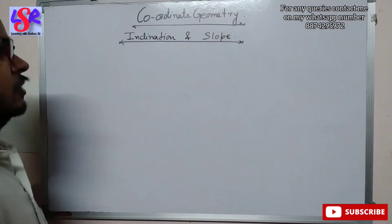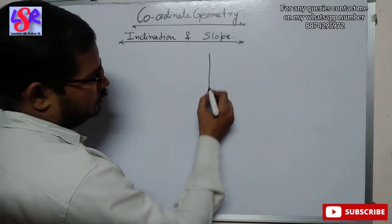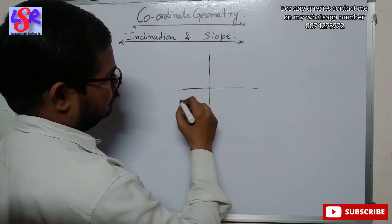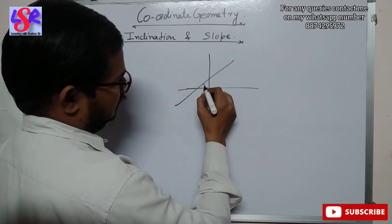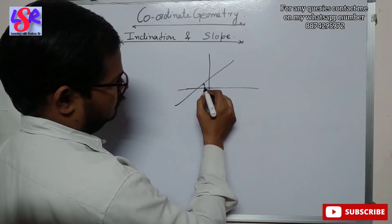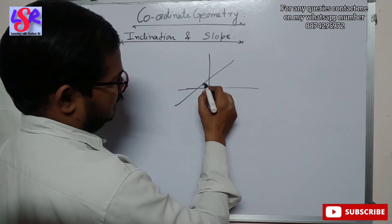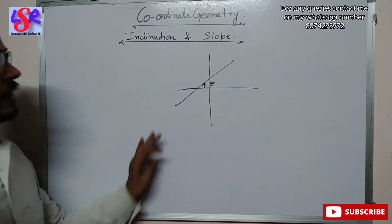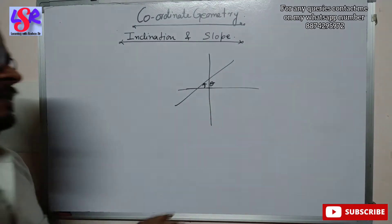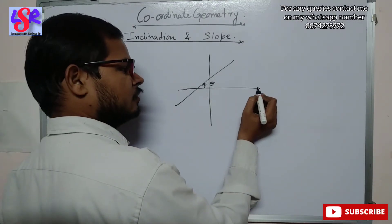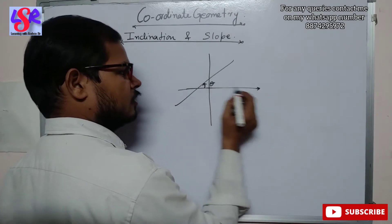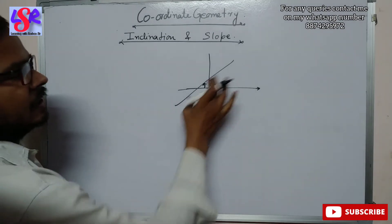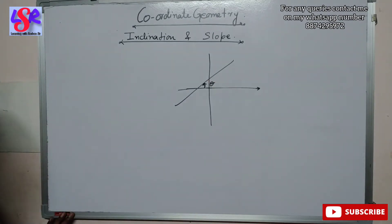So first of all, what is inclination? If we have any coordinate axis in which a line is making an angle in an anti-clockwise direction, that theta is known as inclination on the x-axis. Make it very clear: this is only counted on the x-axis and in anti-clockwise direction. And theta is the inclination of this line on the x-axis.